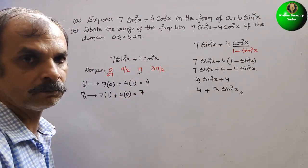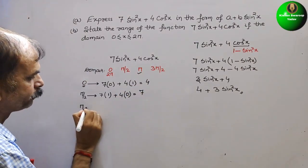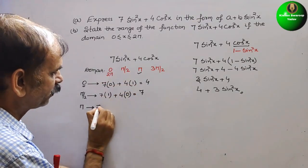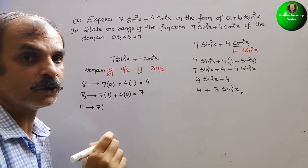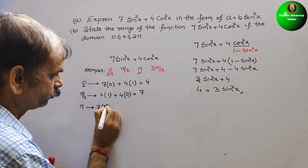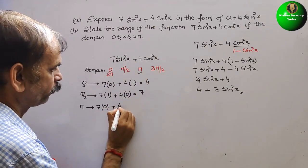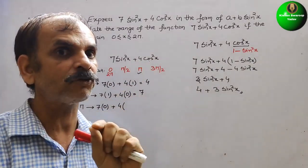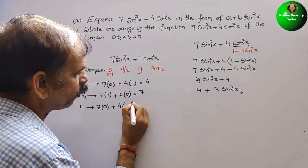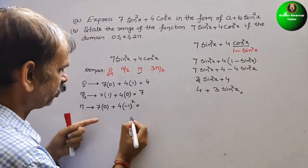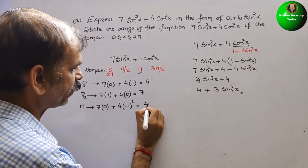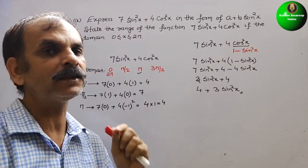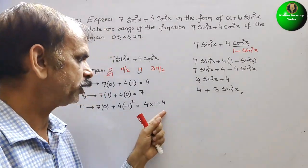At x = π: sin(π) = 0, so sin²(π) = 0. And cos(π) = -1, so cos²(π) = (-1)² = 1. Therefore: 7(0) + 4(1) = 0 + 4 = 4. So f(π) = 4.